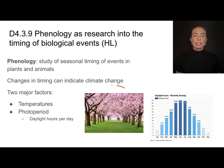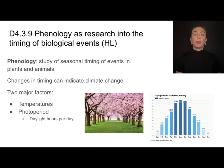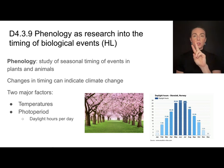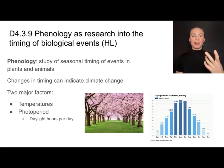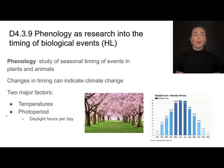If we're looking at things like blooming, those changes in timing can often indicate climate change. Things that have seasonal timings will have two major factors that play into when those events occur: temperature and photoperiod. Photoperiod is the number of daylight hours per day, which varies seasonally.